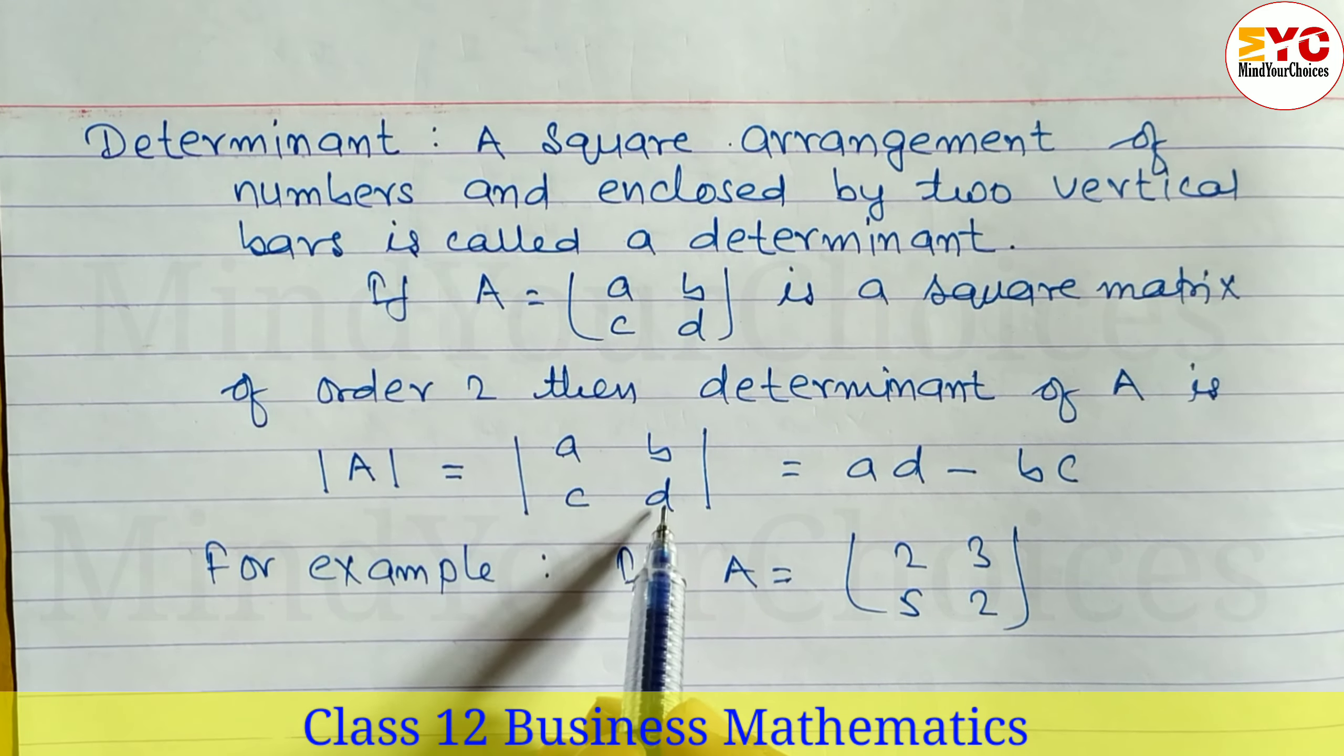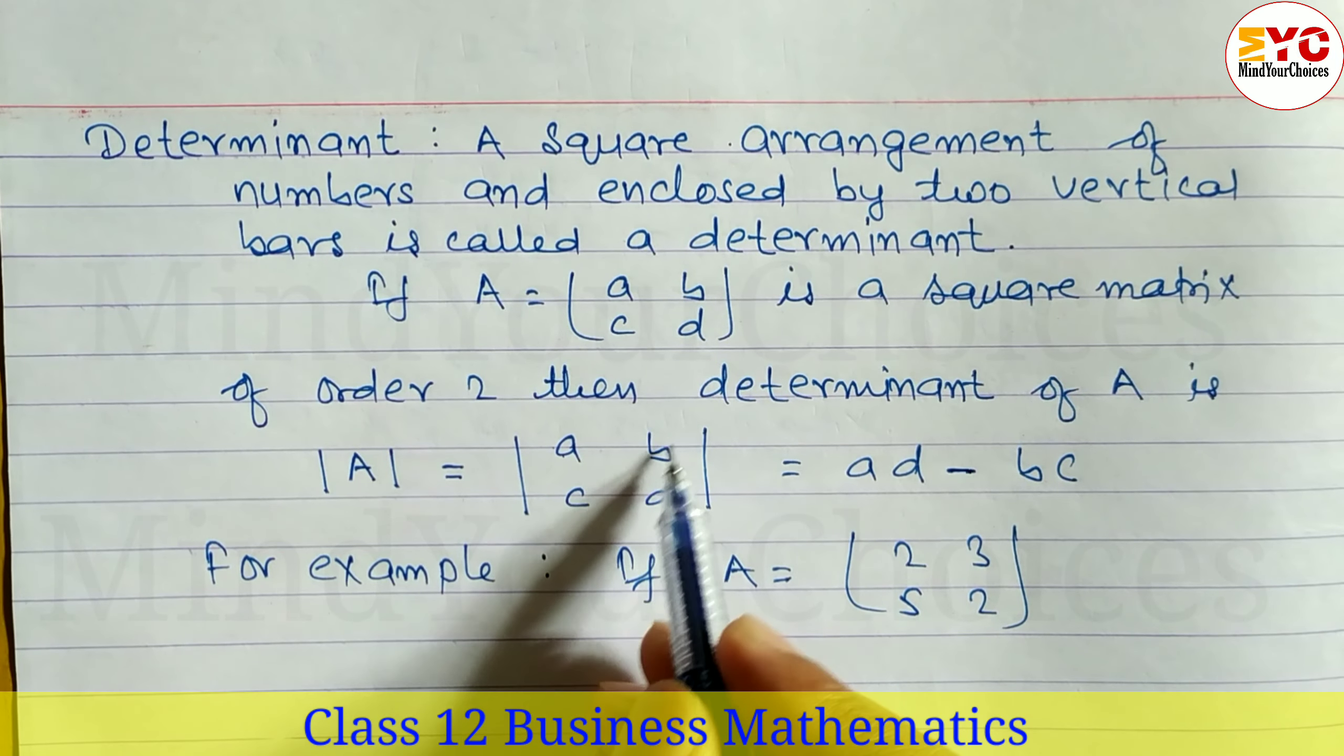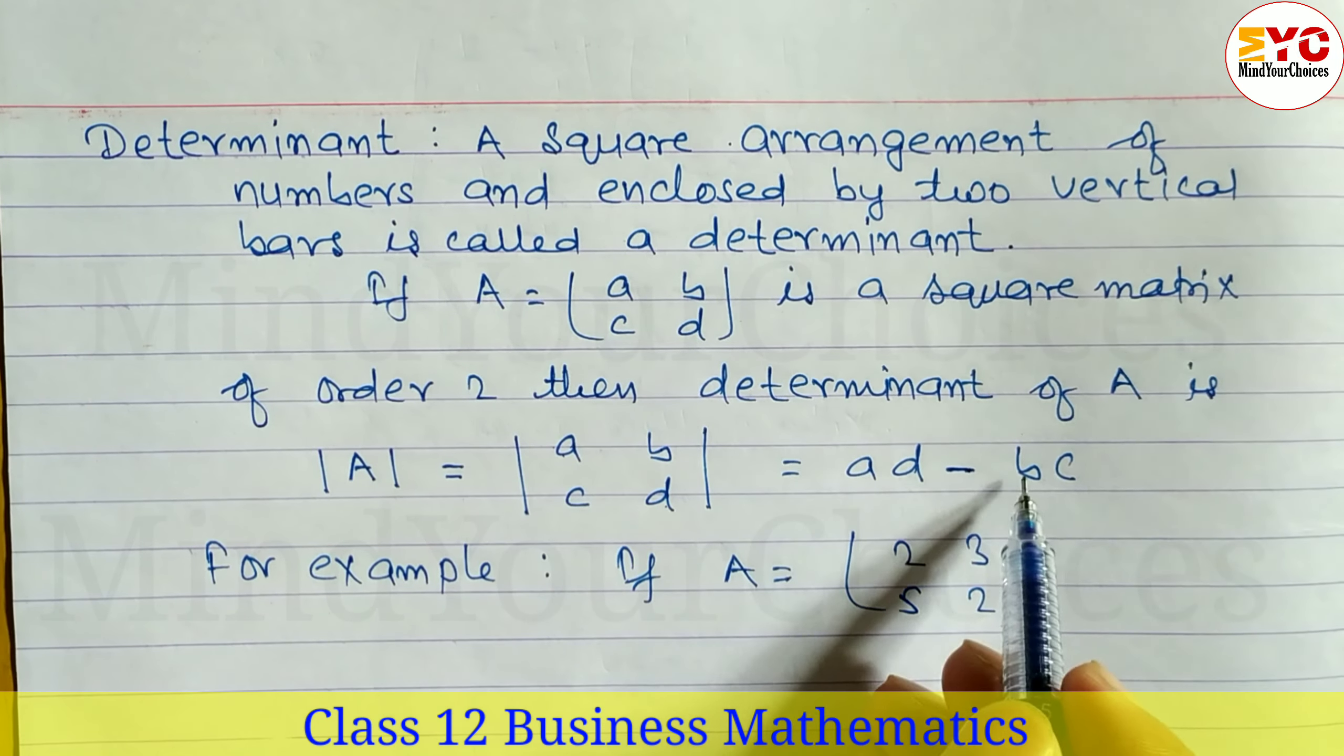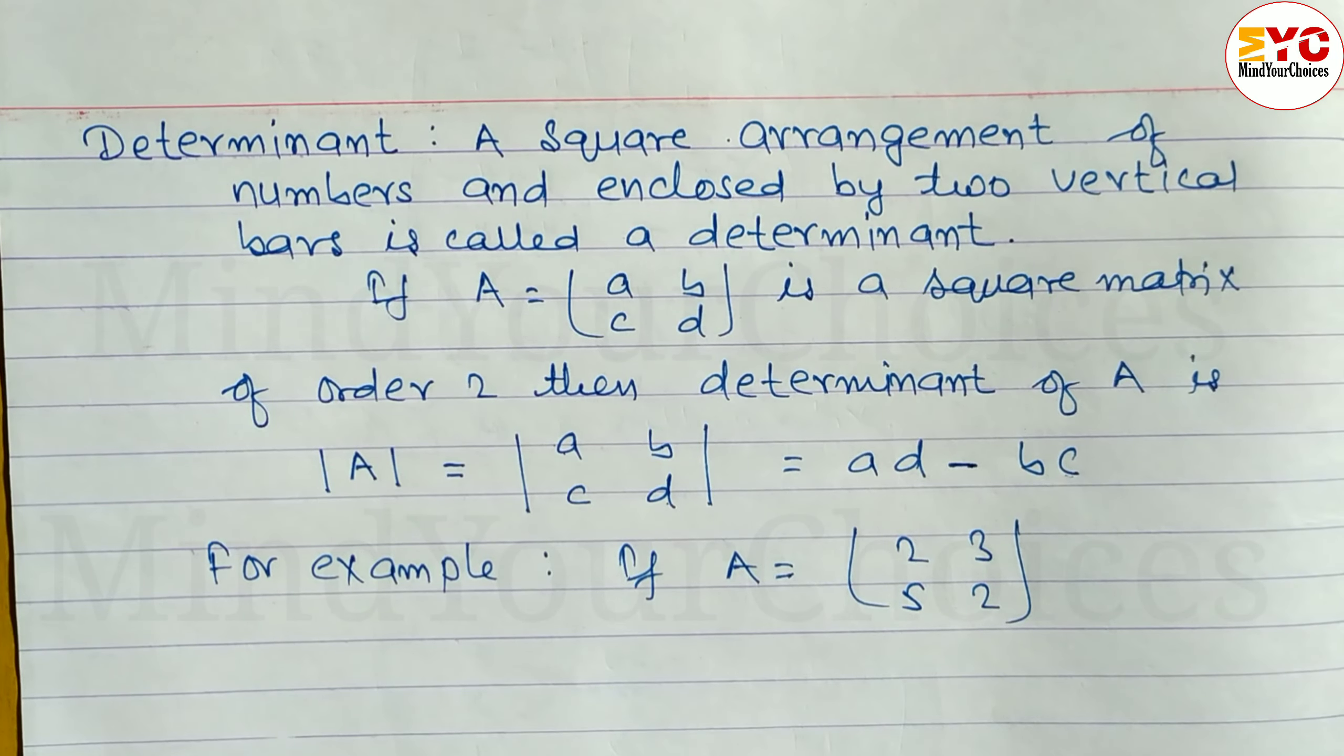Write the elements A, B, C, D enclosed in vertical bars. The formula is to multiply the main diagonal A into D, minus the non-diagonal B into C. To find the determinant, always use this rule: multiply the main diagonal A into D minus B into C.